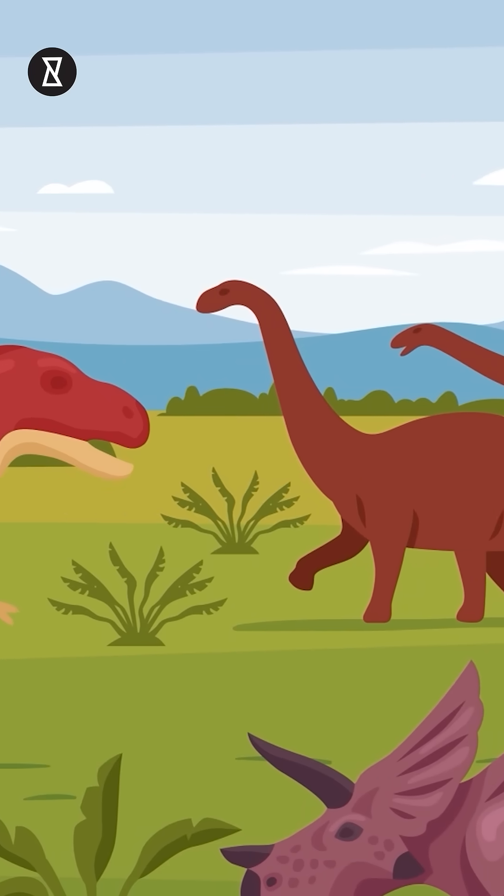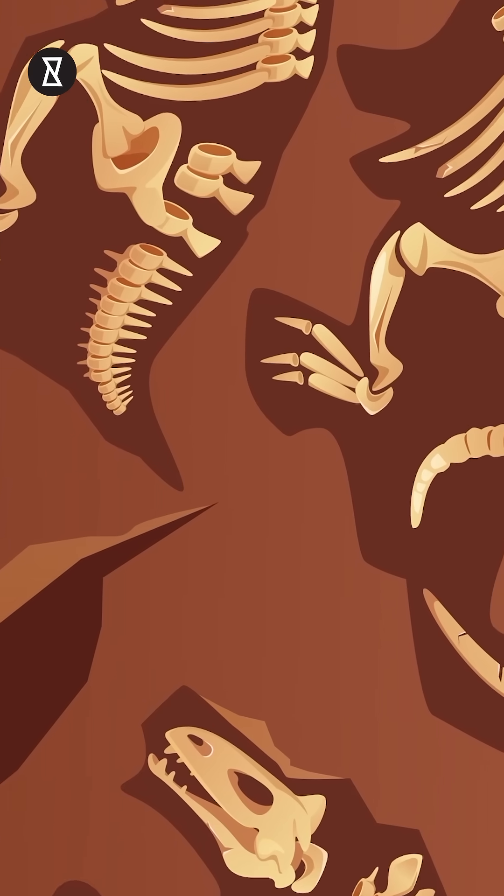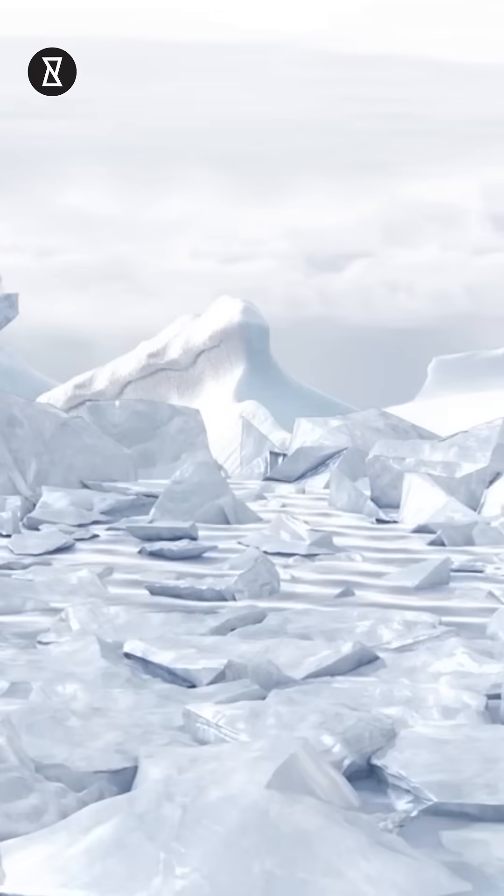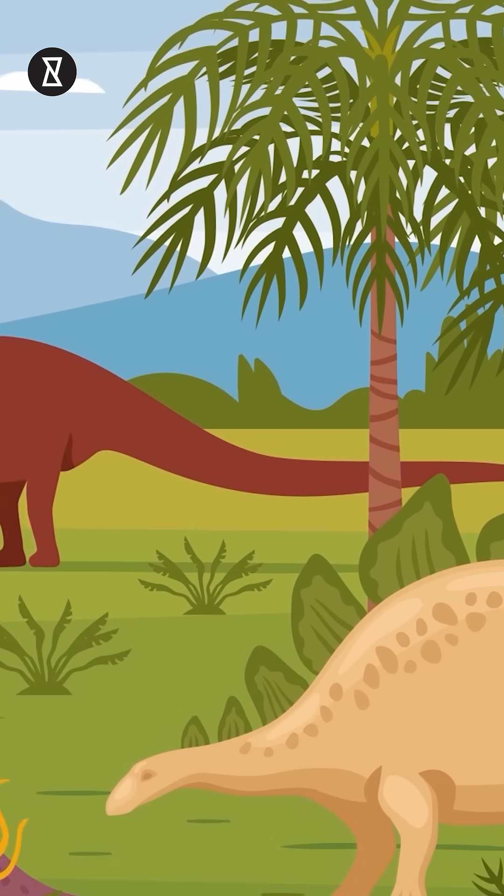There are several theories to explain their extinction. One is the rise of humanity, which resulted in them being hunted to extinction. Another is that climate change occurred at one point in the Earth's past, altering Earth's environment just enough so that survival became impossible for these large beasts.